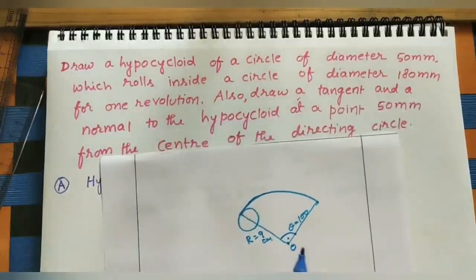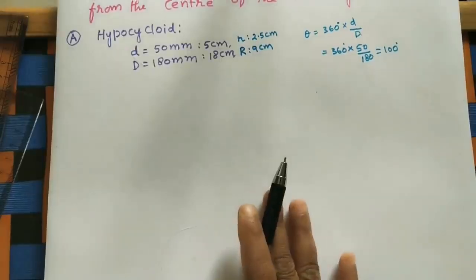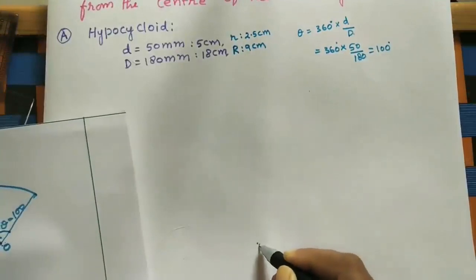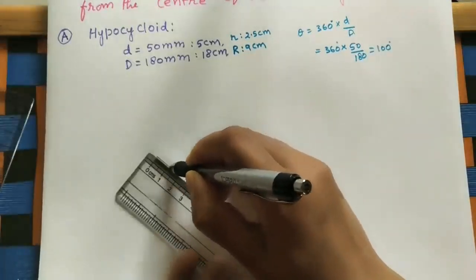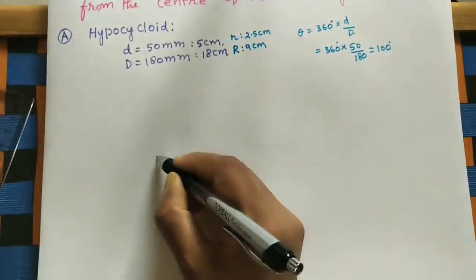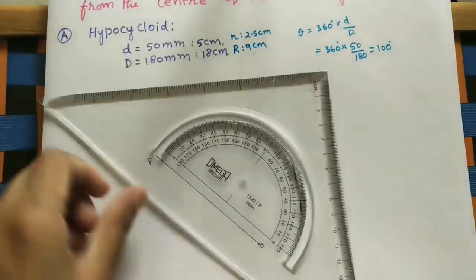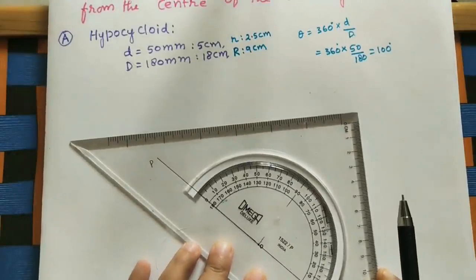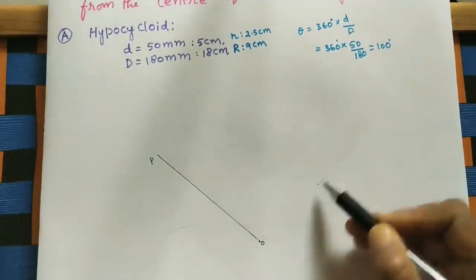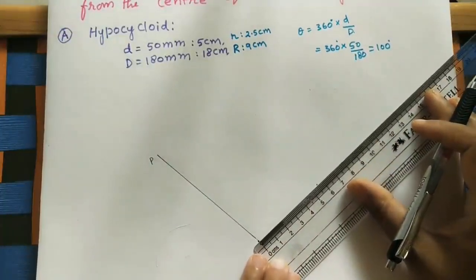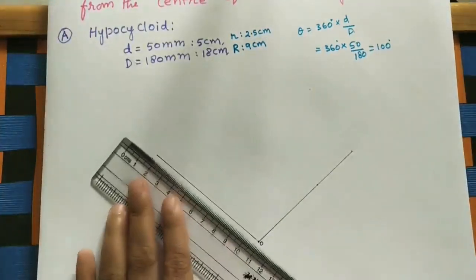Now let us draw the diagram using instruments. Mark any point as center O. From O, draw a line of 9 cm — mark this point as P. Then take 100 degrees from this reference line using a protractor: 80, 90, 100 degrees. Join the center to this new point; this length is also 9 cm. Mark this as point Q.